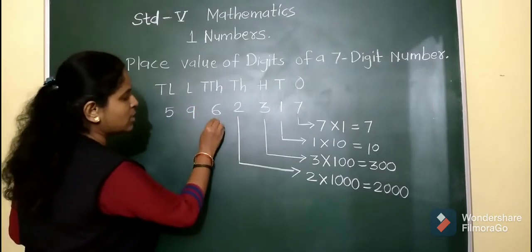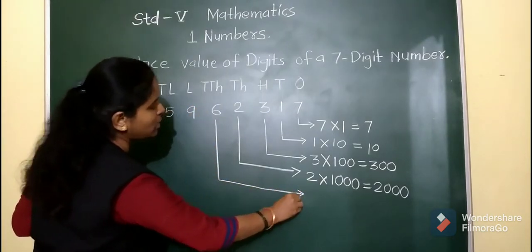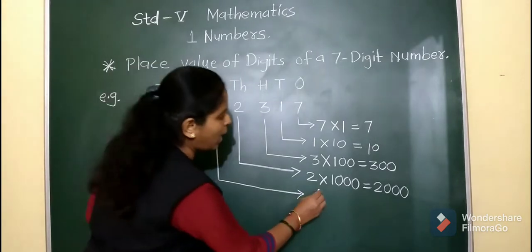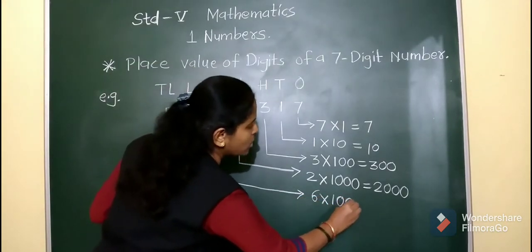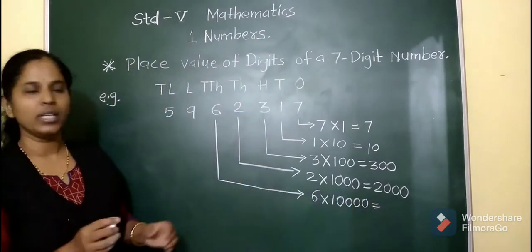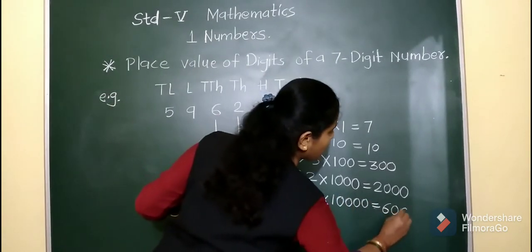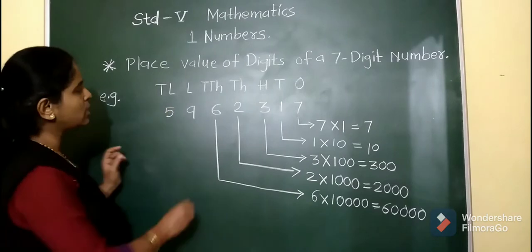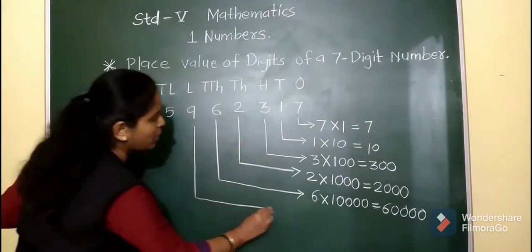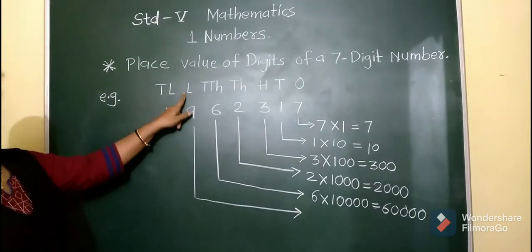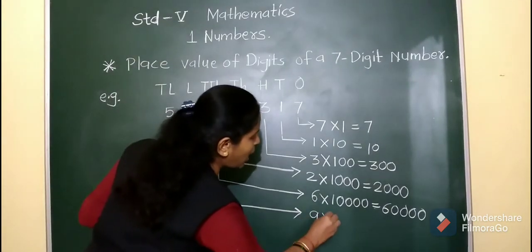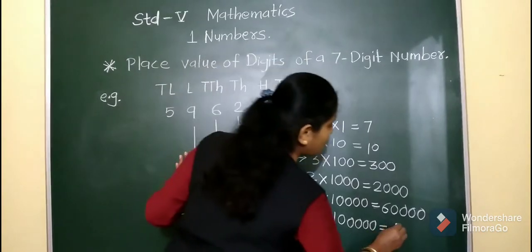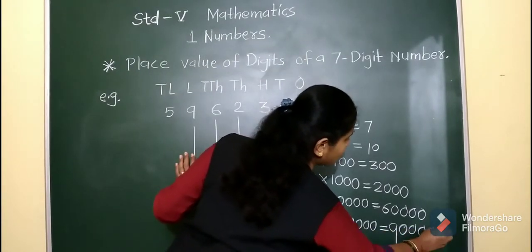Next digit is 6. 6 is at the 10,000s place, so we multiply 6 by 10,000. The place value of 6 is 60,000. Next is 9. 9 is at the lakhs place, so we multiply 9 by 1 lakh. The place value of 9 is 90,000.